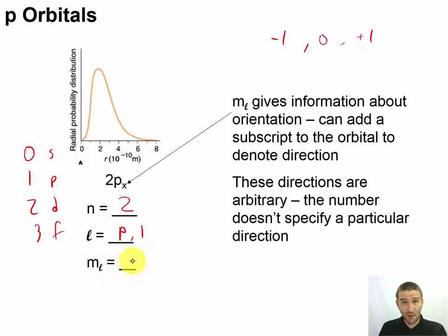For m sub l, we get to pick which one we want, because like we specified over here, unless we actually say which direction it's going, we get to pick. So in this case, I'd say negative 1. Or, I'd say 0. Or, I'd say 1.